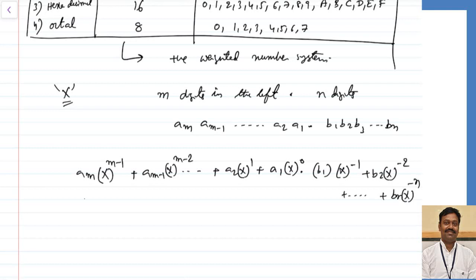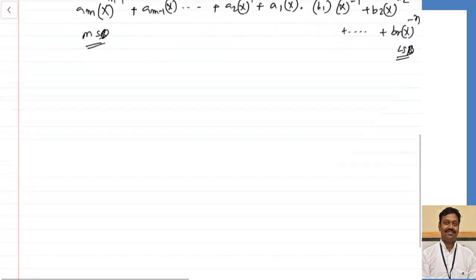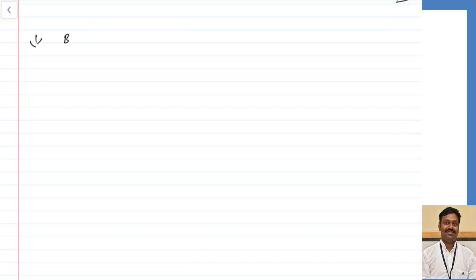The leftmost digit is called the most significant bit (or digit), and the rightmost is called the least significant bit or least significant digit. The term 'bit' is generally used in the binary number system, while other number systems use 'most significant digit' and 'least significant digit.' Since you already know the decimal system, I am skipping it, but we will refer to it while discussing other number systems.